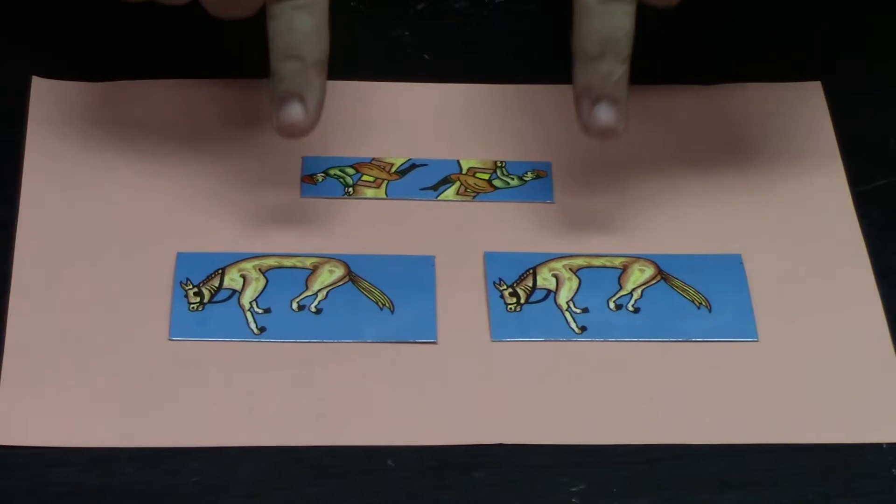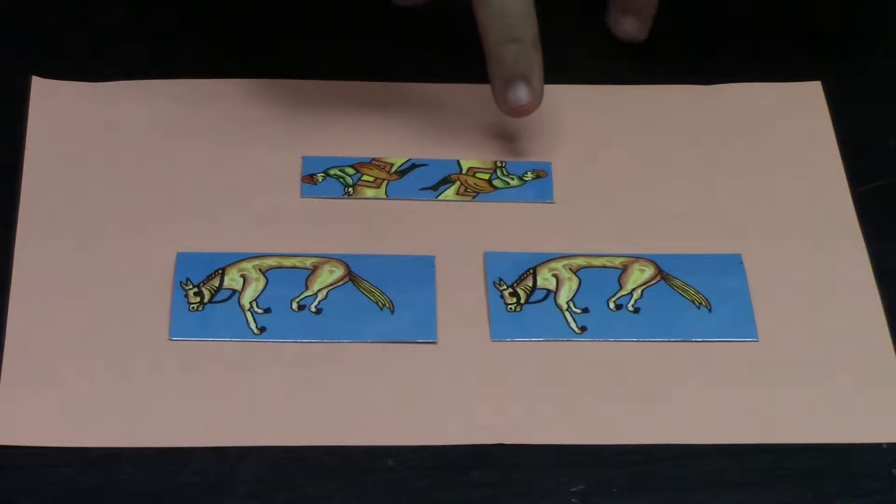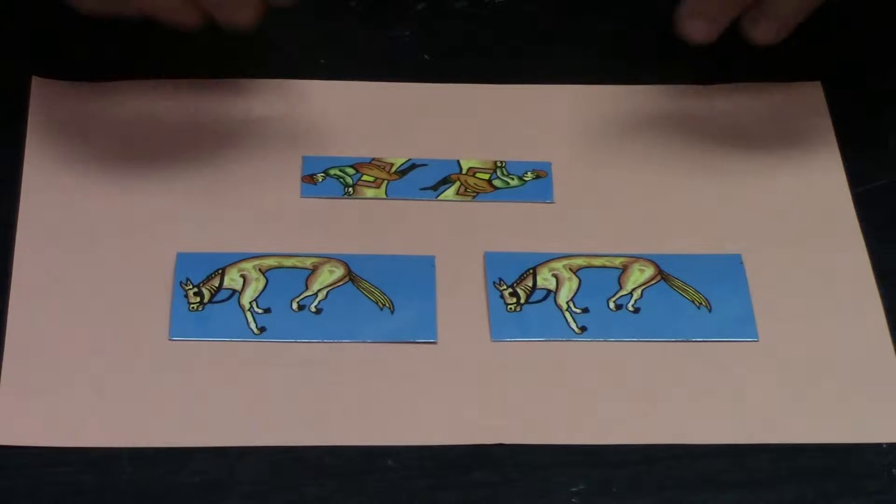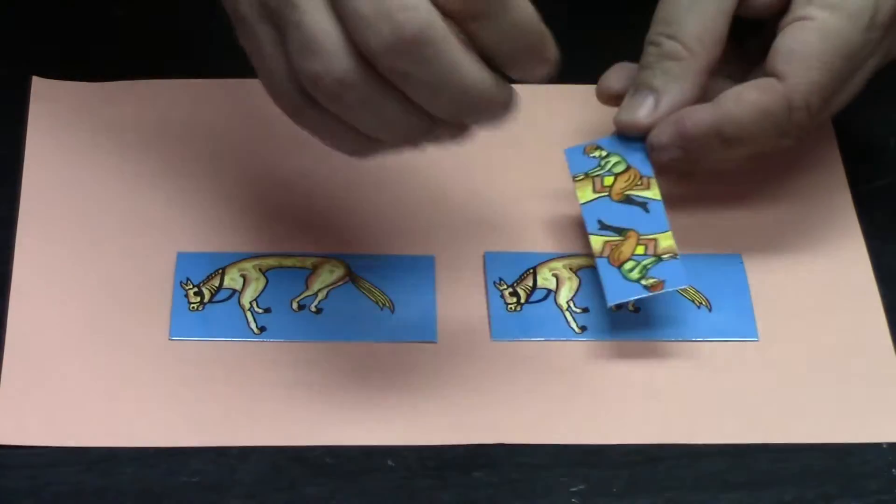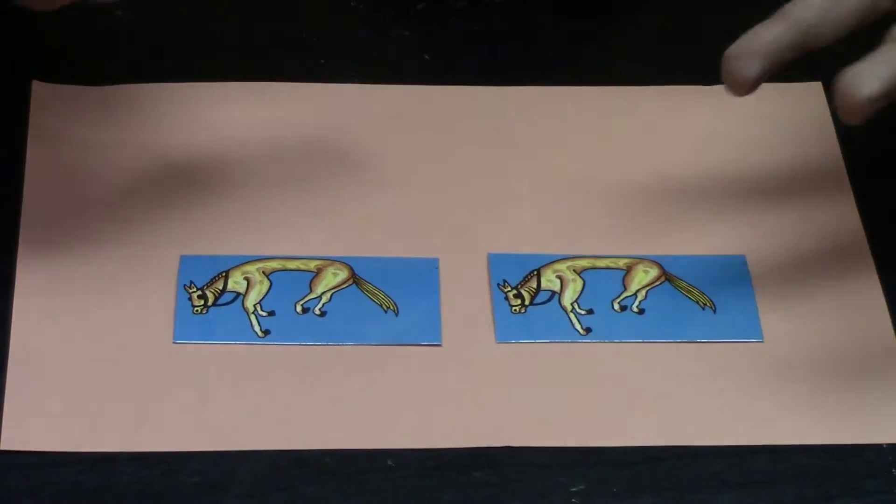What we have here is a picture of two donkeys and a pair of riders. And what we try to do is put the riders on the donkeys so that they both look normal.